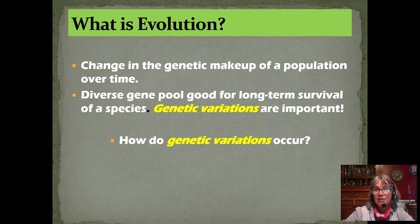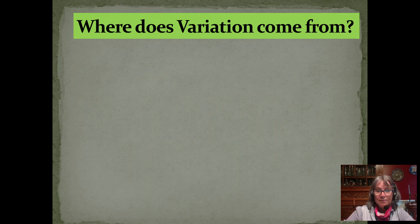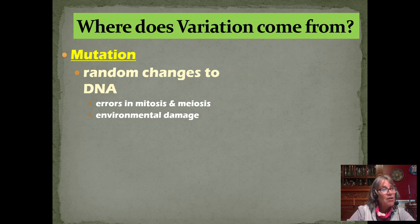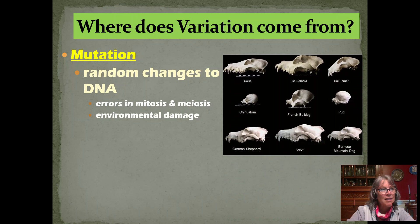So how do genetic variations occur? Where do we get them? At the most basic level, they all start through mutation — a random change to DNA. We might get those changes from errors during mitosis or meiosis when making a copy in the S phase. It could be environmental damage that changes our DNA. These are random; they just happen. It's an error that gets passed on.